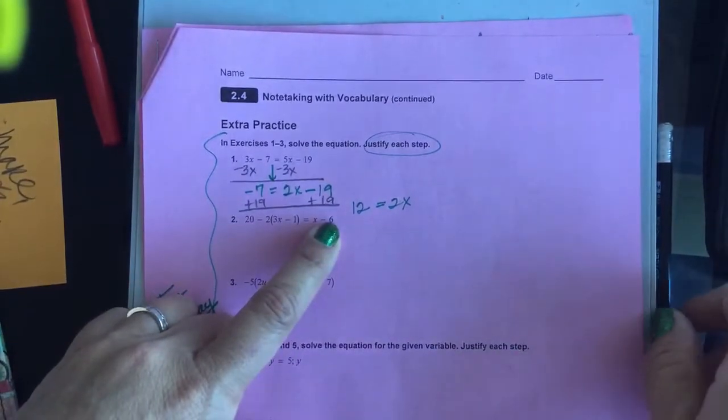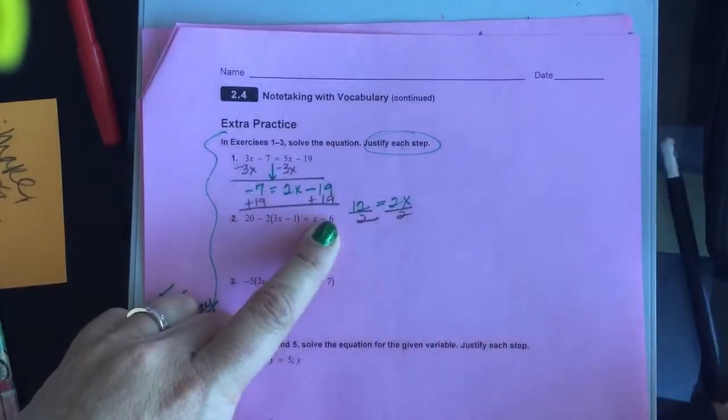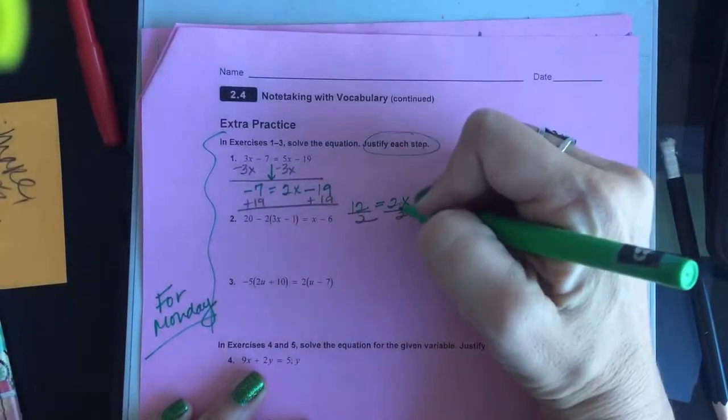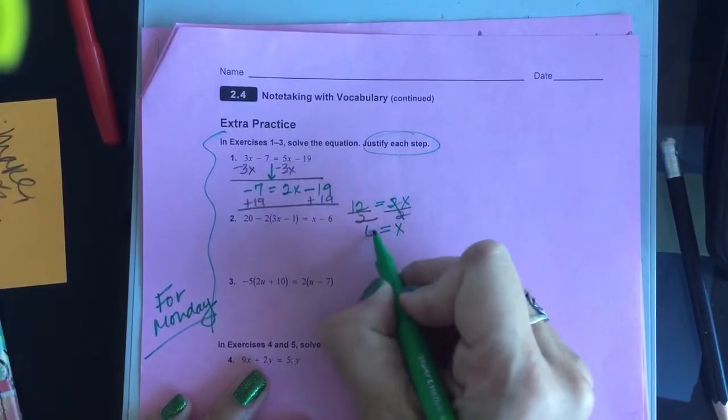Lena, what's your question? I thought we were supposed to put justify each step. I'm getting there. So when I divide everything by 2, I'm getting x is equal to 6.